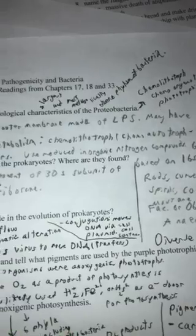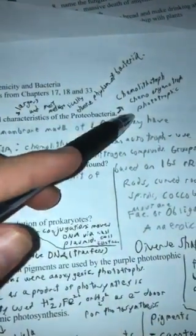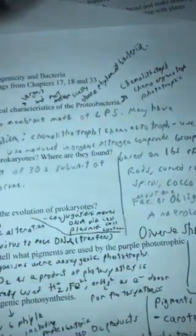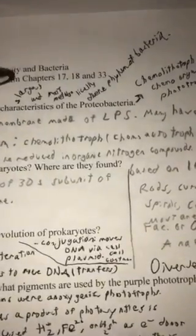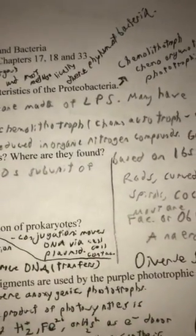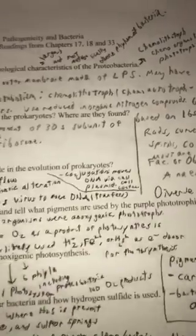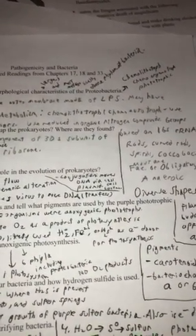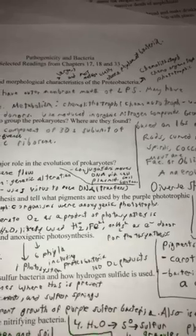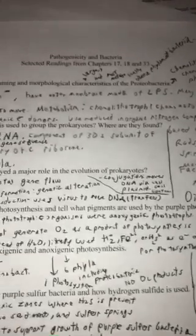They also have an outer membrane made of lipopolysaccharide. Proteobacteria include chemolithotrophs, chemo-organotrophs, and phototrophs. It is the largest and most metabolically diverse phylum of all bacteria.